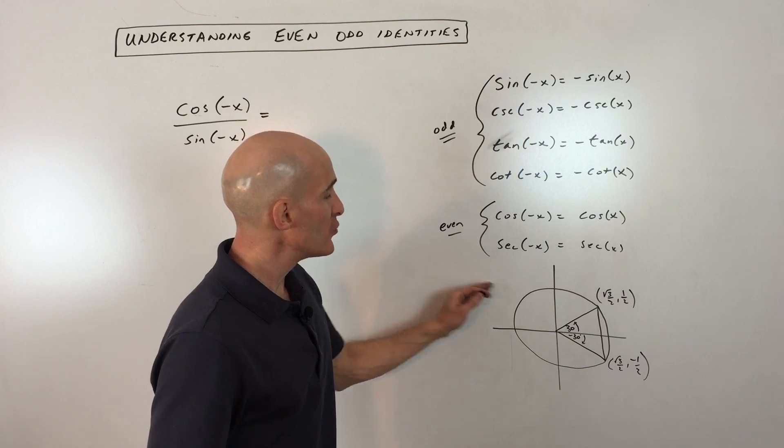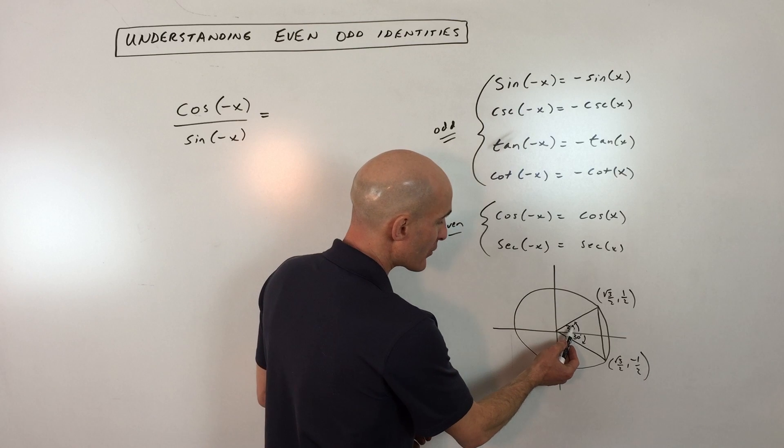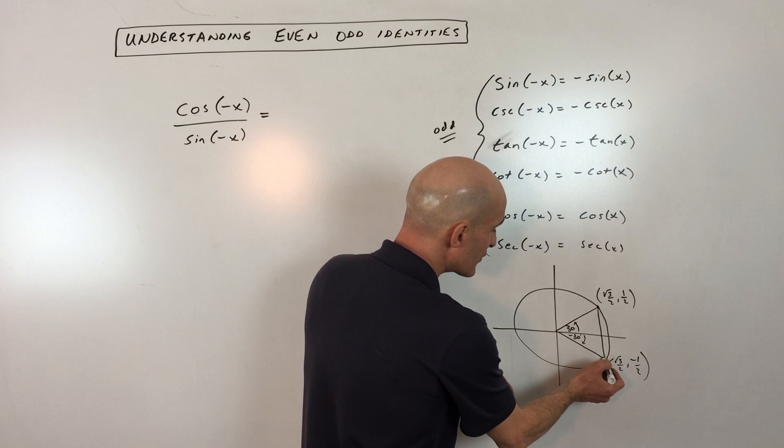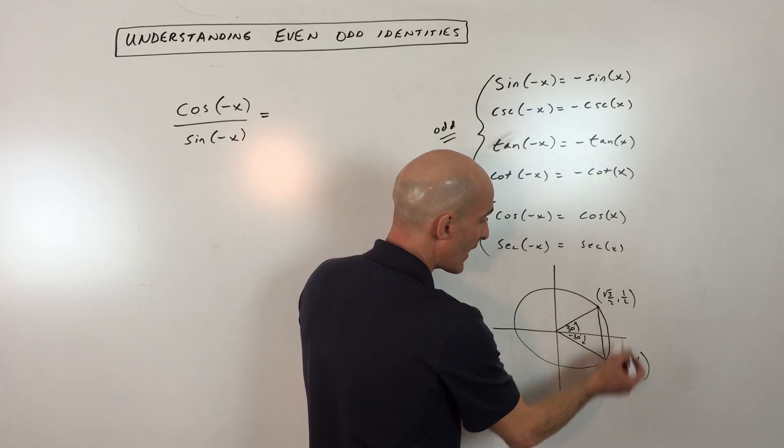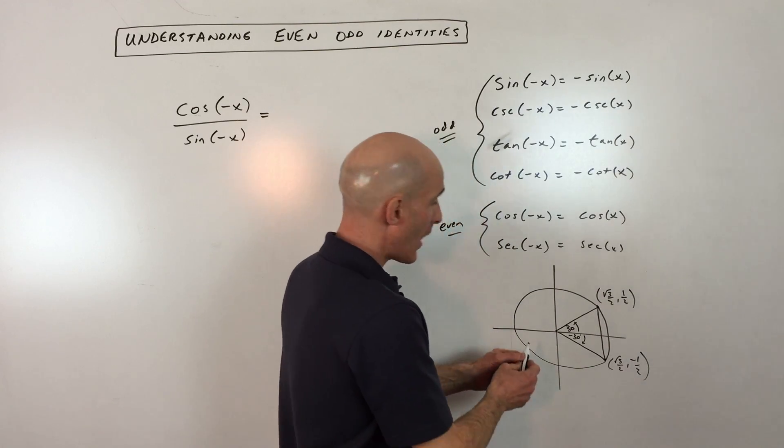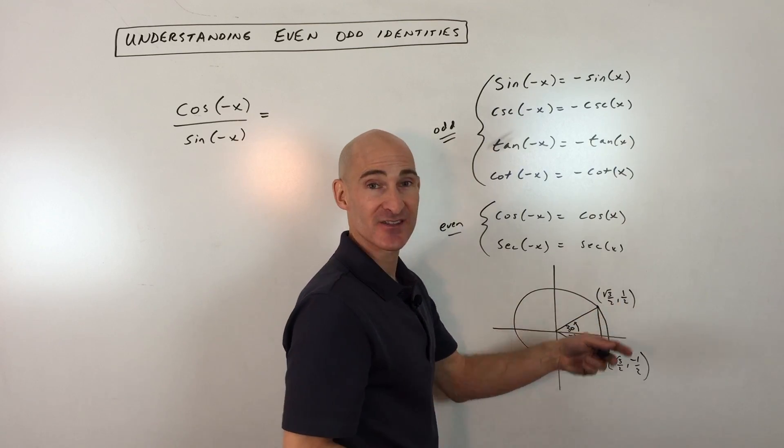So you know the unit circle already and I'll show you an example here. If you have a 30 degree angle versus a negative 30 degree angle, we know the coordinates of these points on the unit circle are root 3 over 2, 1 half, root 3 over 2, negative 1 half. Now on the unit circle, you know that the cosine is the x coordinate and the sine is the y and the tangent is y over x.